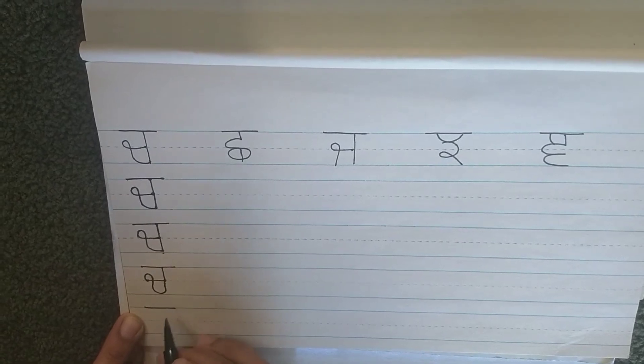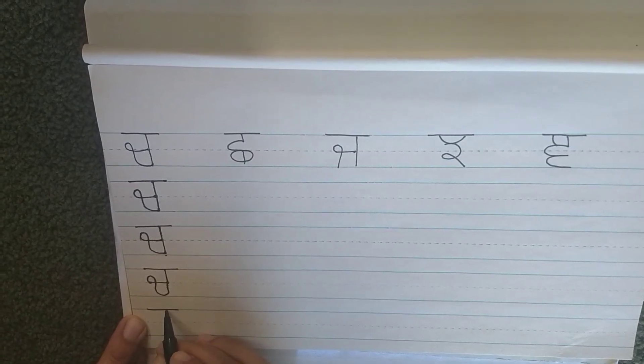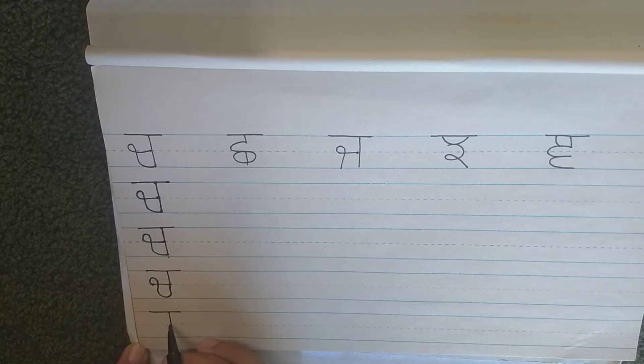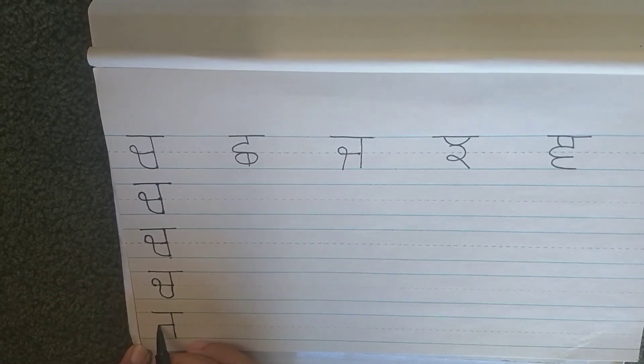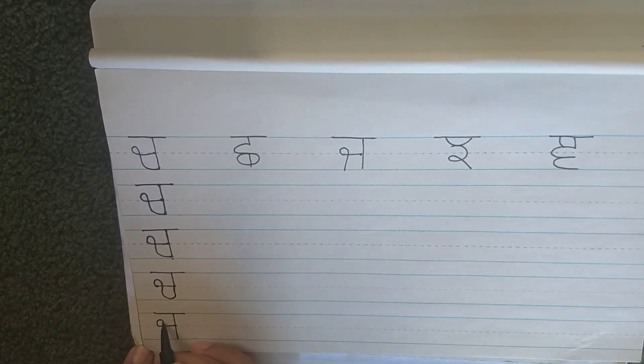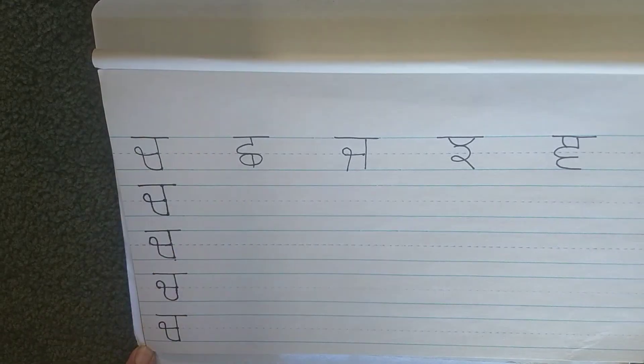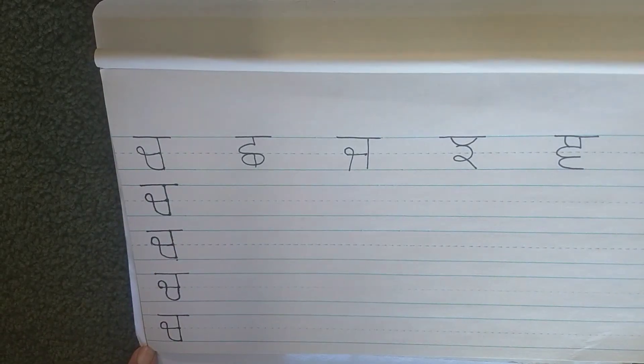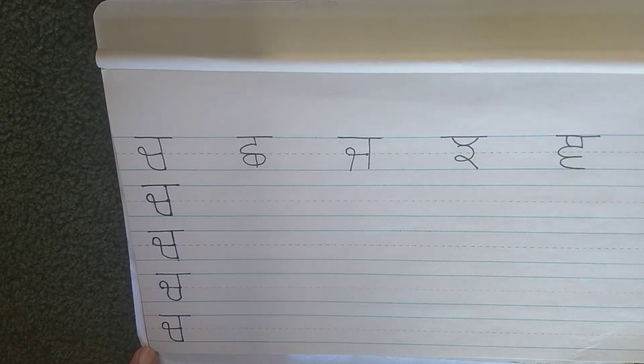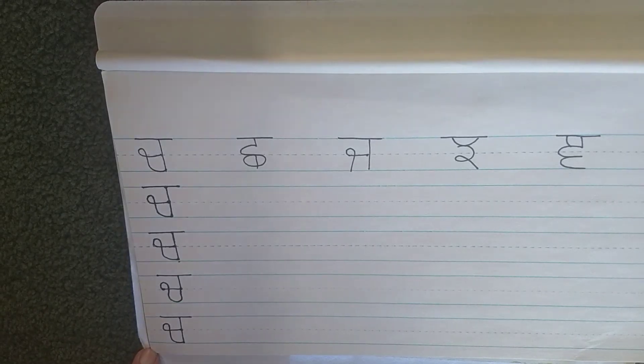So let's do one more time. Straight line, then line down, then go left, go up, loop, cross, and curve, and join. Chacha, chacha chaabi, chacha chaar, chacha chuha.